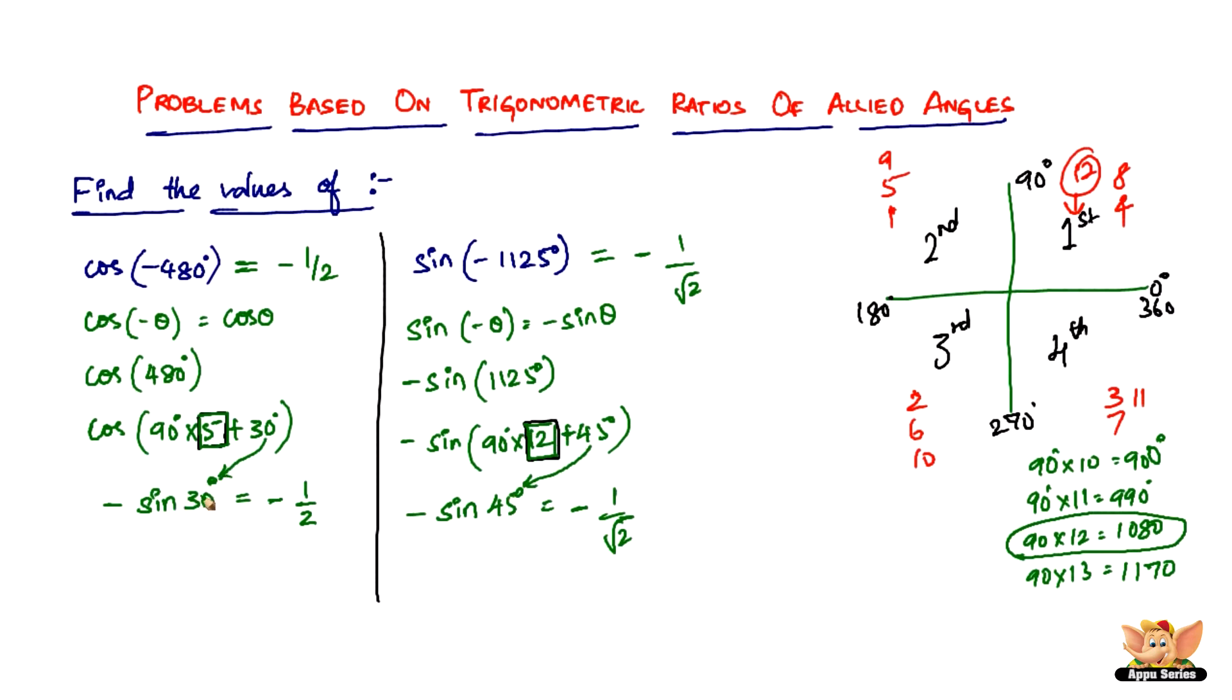That tells you which trigonometric ratio it's going to be. Once you get that, you just have to plug this number here: in this case it's 30, in this case it's 45. You need to know the basic ratios. Sine of 30 degrees is half, sine of 45 degrees is 1 by root 2, and whatever sign just added to it. So this ends these kinds of problems as well as this video. I'll see you in the forthcoming videos with more advanced problems based on trigonometric ratios of allied angles.